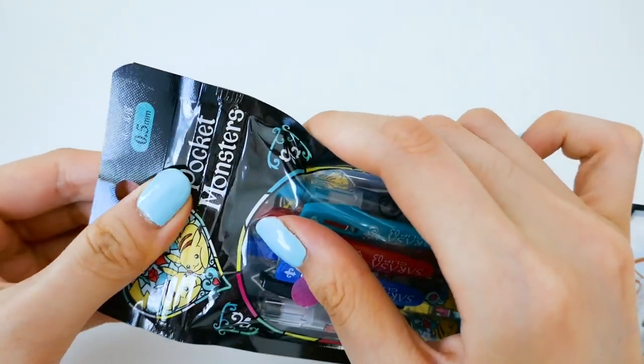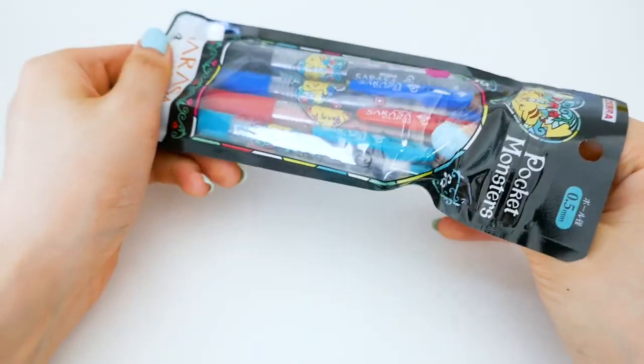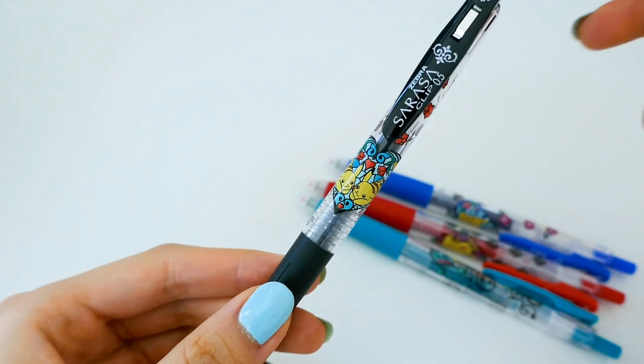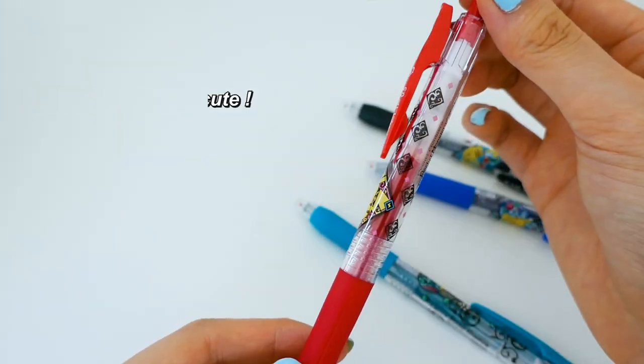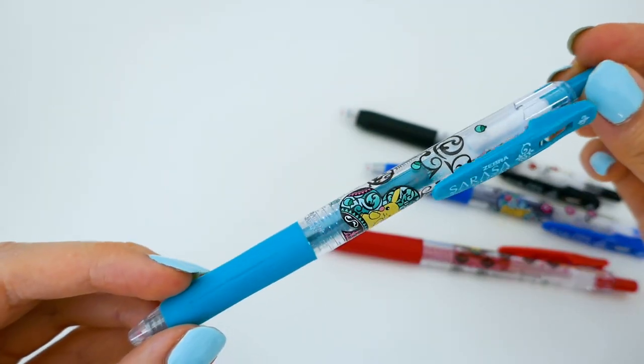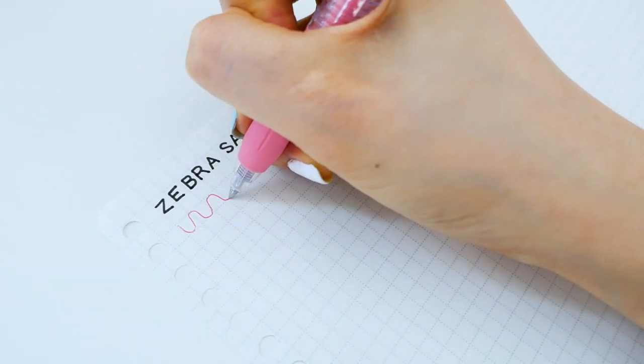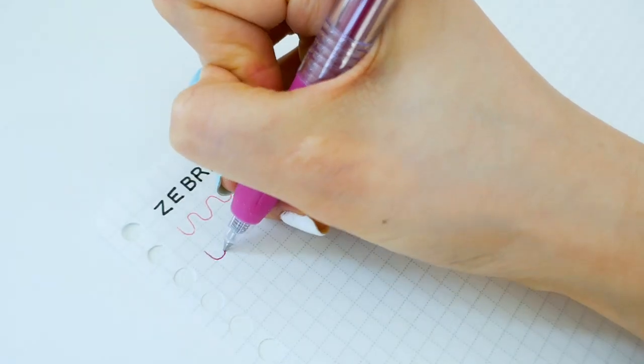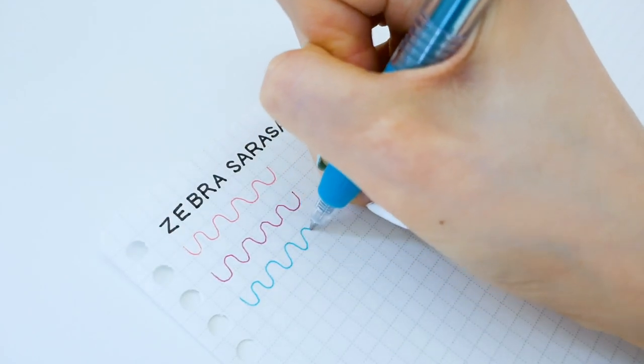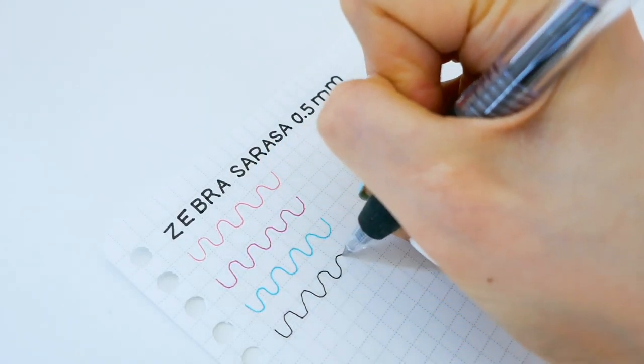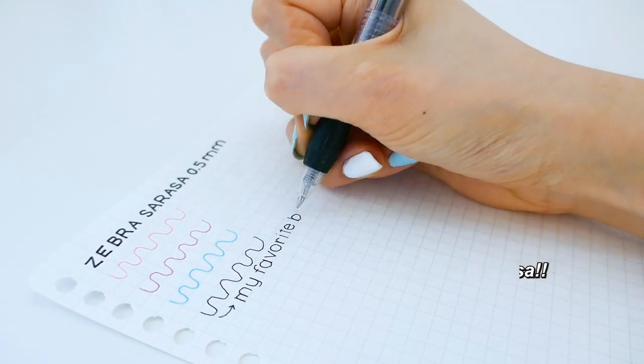I kind of struggled with finding the opening but it turns out it's just like a ziploc bag and you can just take them out. These are super cute. Oh my god. Here I'm just doing a swatch of the colors. I find these to be super smooth and they don't scratch if you know what I mean. Not to mention the black Zebra Serasa is my favorite all time black pen.